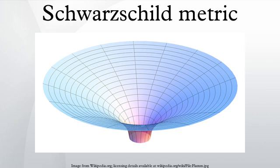In Einstein's theory of general relativity, the Schwarzschild metric is the solution to the Einstein field equations that describes the gravitational field outside a spherical mass, on the assumption that the electric charge of the mass, angular momentum of the mass, and universal cosmological constant are all zero.